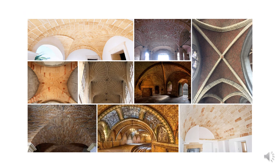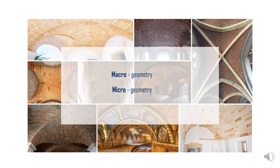Masonry vaults represent one of the most widespread structural elements in historical constructions. They can be built with different shapes and forms, but also with different construction techniques, for example with big blocks or small bricks. For the aim of this presentation, a distinction will be made between macrogeometry and microgeometry.